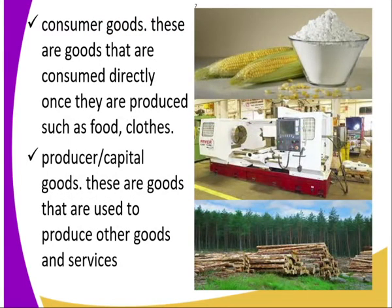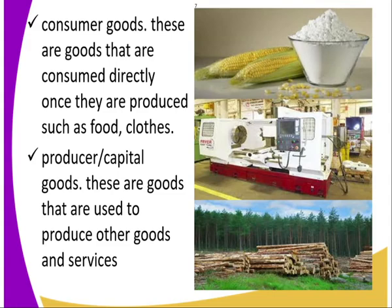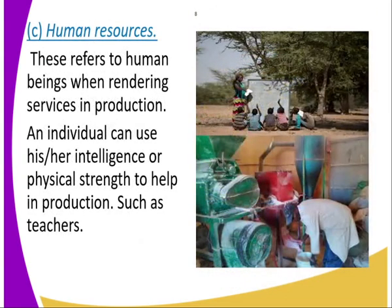Consumer goods are also another classification — these are goods that are directly consumed by human beings, like food and clothing. Then there are producer, or capital, goods — these are goods used to produce other goods and services. For example, trees that give us logs which give us timber. Then we have human resources, which refers to human beings rendering services in production; an individual can use their intelligence or physical strength to help in production, like a teacher.